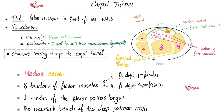Carpal tunnel — what's the definition? It's a fibro-osseous tunnel in front of the wrist, more anterior than posterior. What are the boundaries of the carpal tunnel? Anteriorly, it's bound by the flexor retinaculum. Posteriorly, by the carpal bones and their interosseous ligaments.